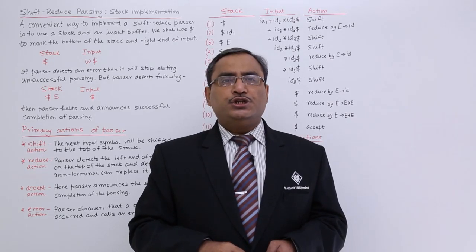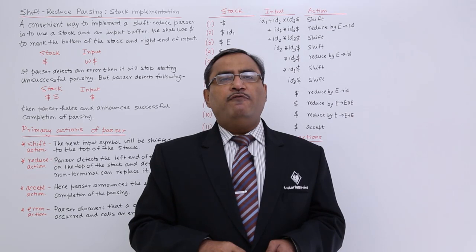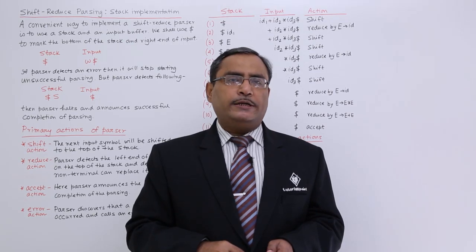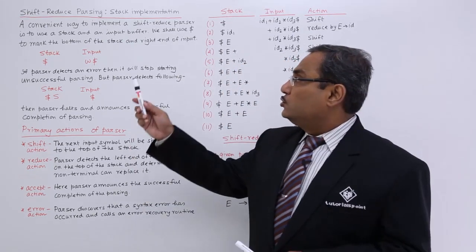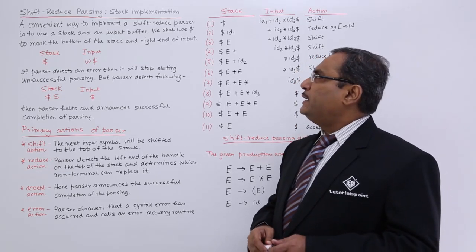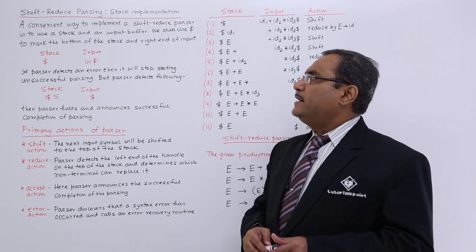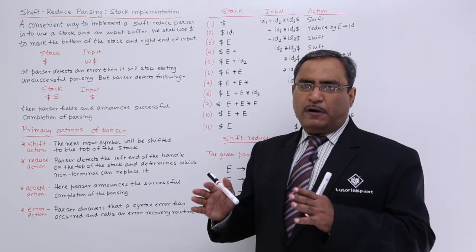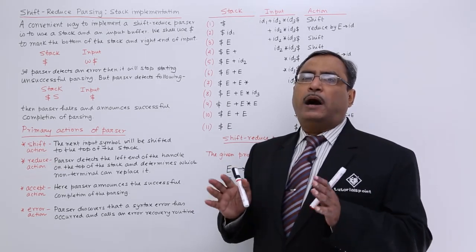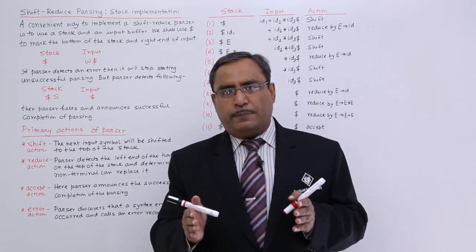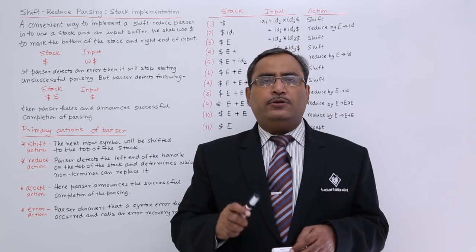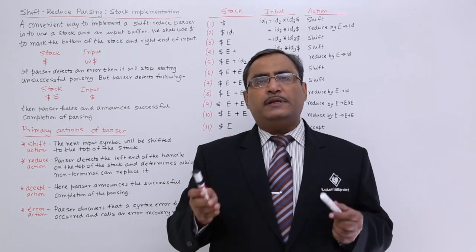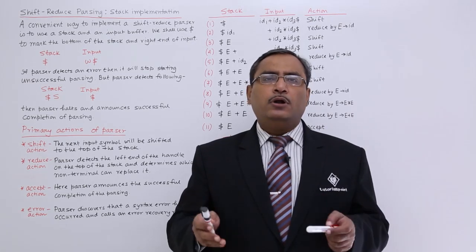In this session we are going to discuss shift and reduce parser. It is one of the very simple parsers and it gets implemented using one stack. A convenient way to implement a shift-reduce parser is to use a stack and an input buffer — one stack and one input buffer. The input buffer holds the string which has to be parsed. The parser will parse the string and at the end tell whether the string has been accepted or produce an error message, and an error recovery routine will handle the situation.